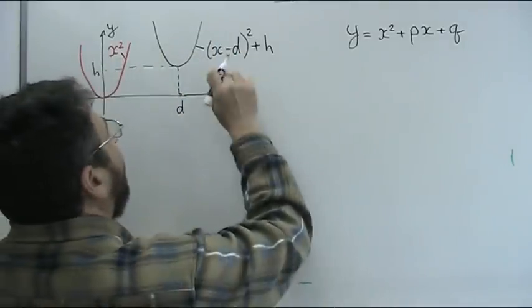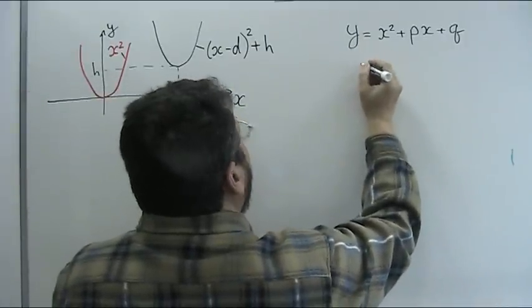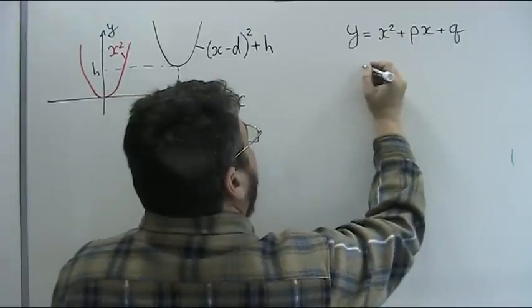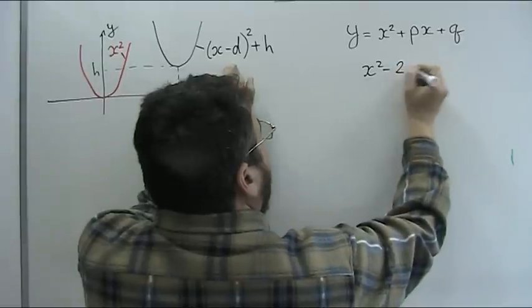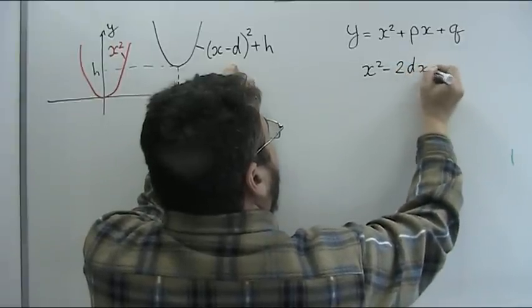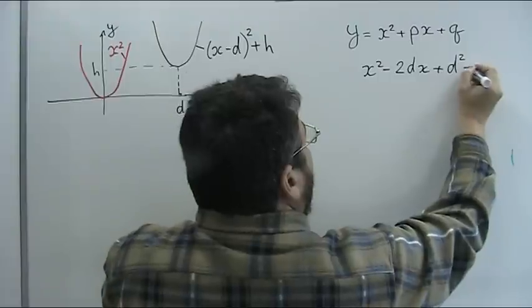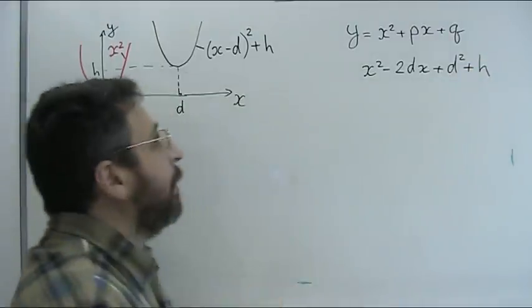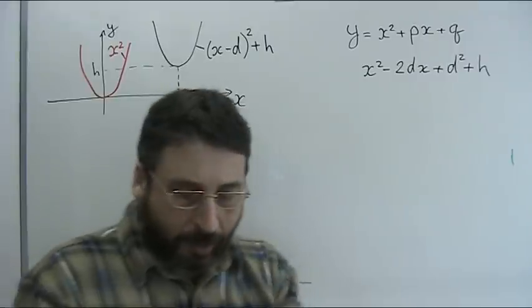Let's do it. It's rather simple. We just open the parenthesis. We get x² - 2dx + d² + h.